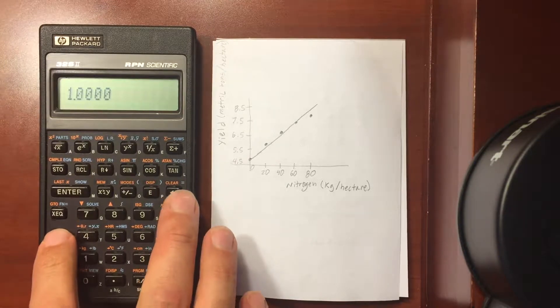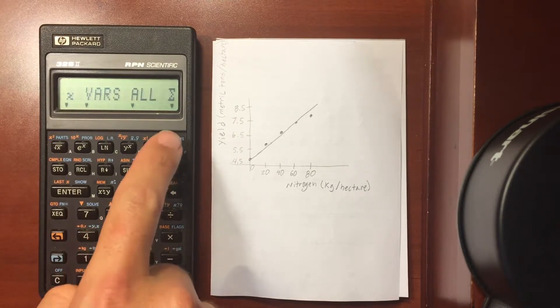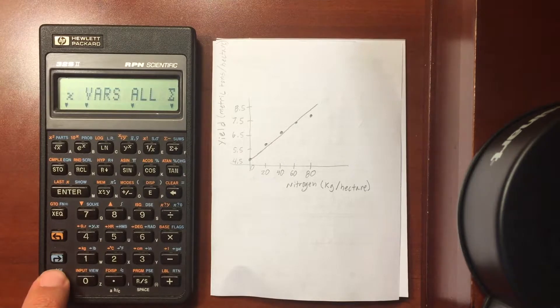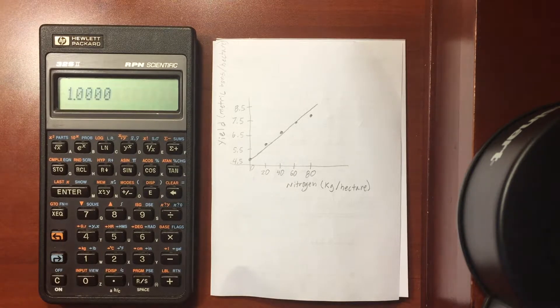Before I started this I went ahead and cleared the summation so that I have nothing in that register. Otherwise I would be adding to it. I want to start with a clean register every time.